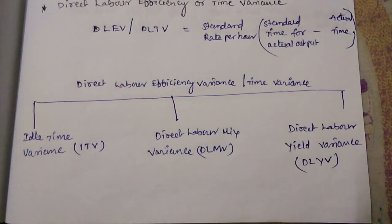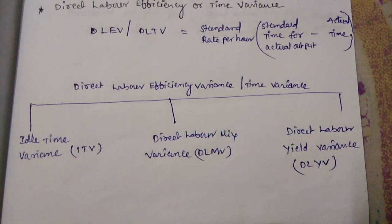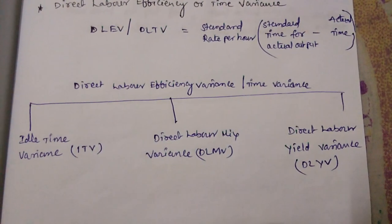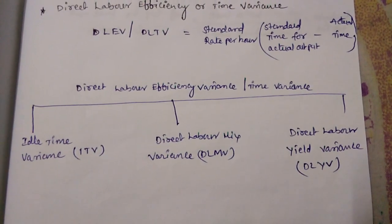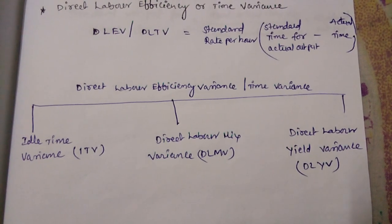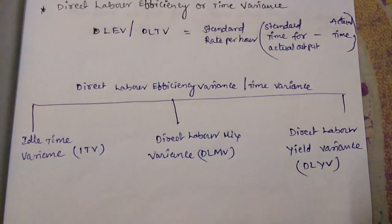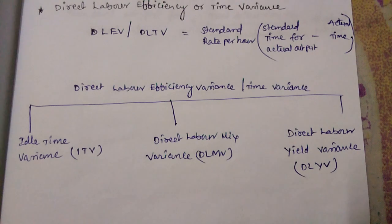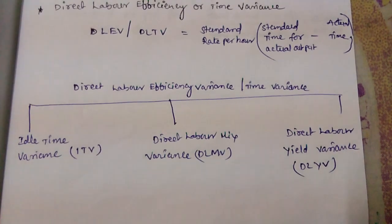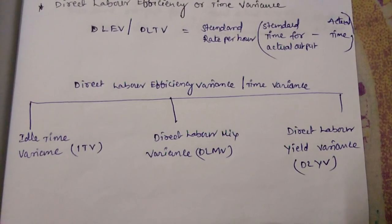Direct Labor Efficiency Variance or Time Variance is divided into three parts: Idle Time Variance, Direct Labor Mix Variance, and Direct Labor Yield Variance.